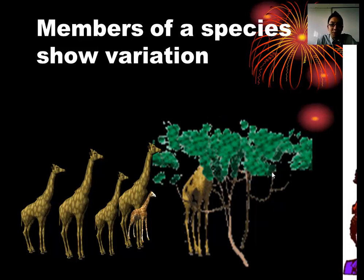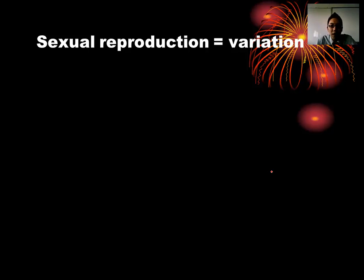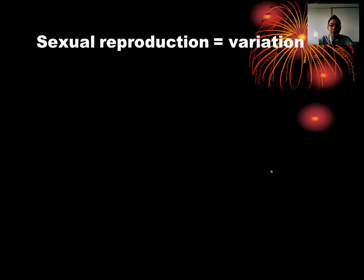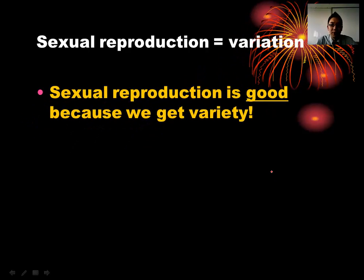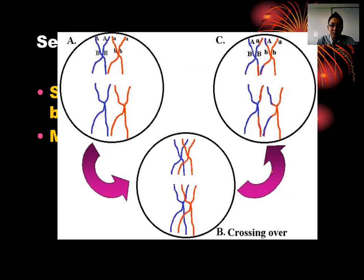Variation is also true for humans. Variation comes about because of sexual reproduction — asexual reproduction just produces identical copies. Sexual reproduction allows variation because you're mixing and creating new genetic combinations. When homologous chromosomes pair up with crossing over and independent assortment during meiosis, you mix up chromosomes and produce a huge variety of different sperm and egg cells. When they combine, you create a genetic combination that's never been made before.